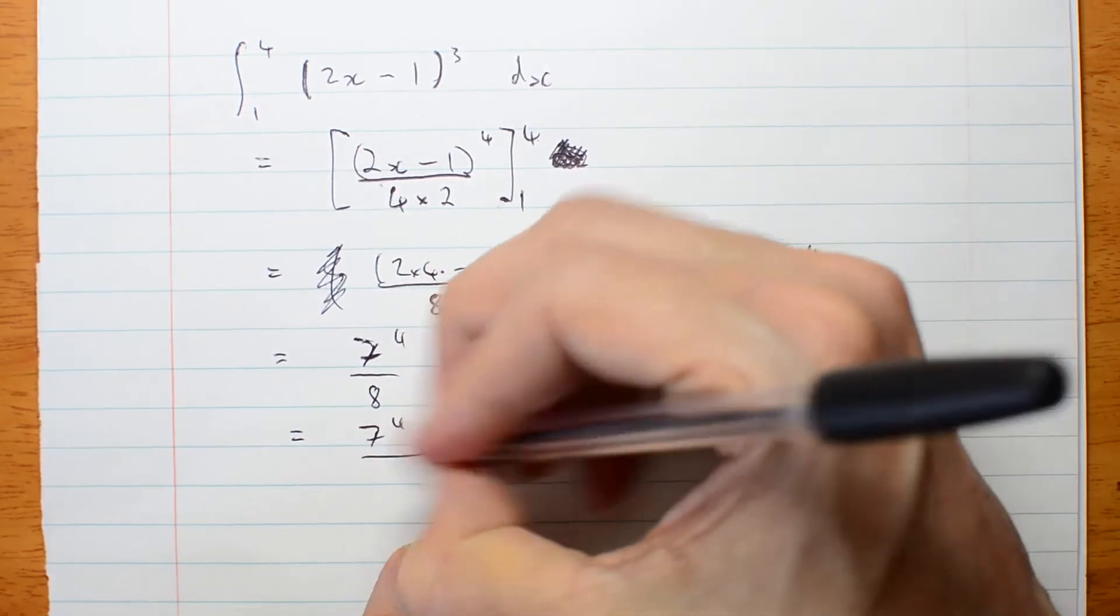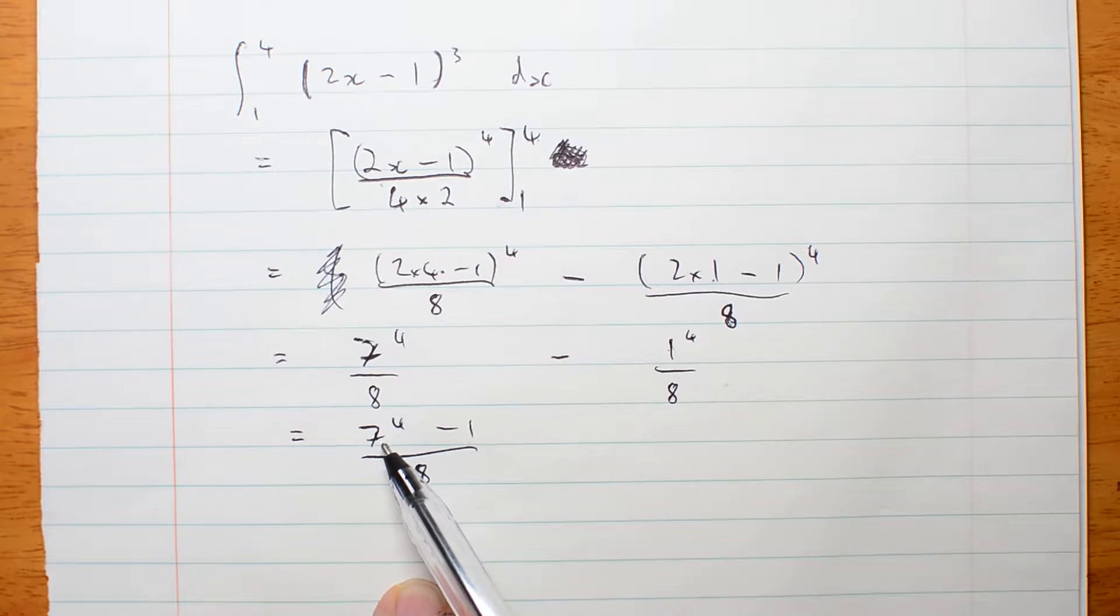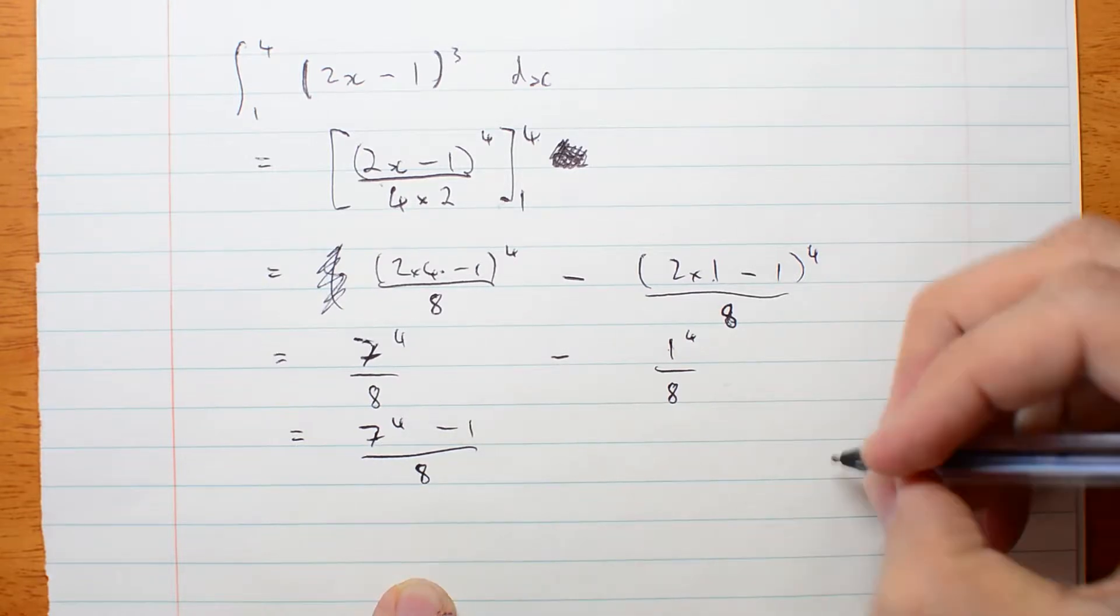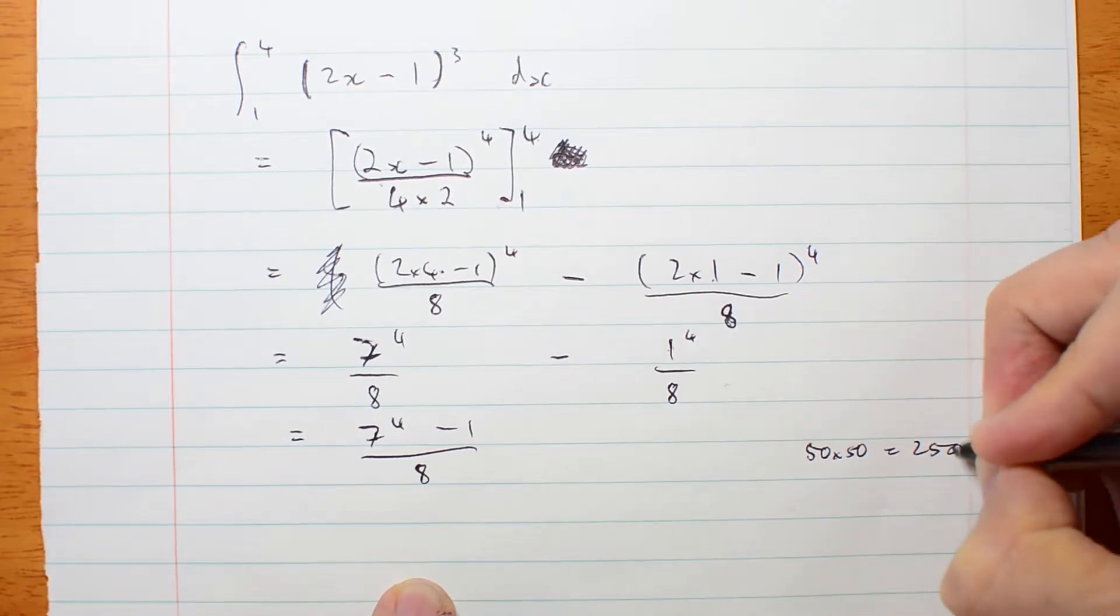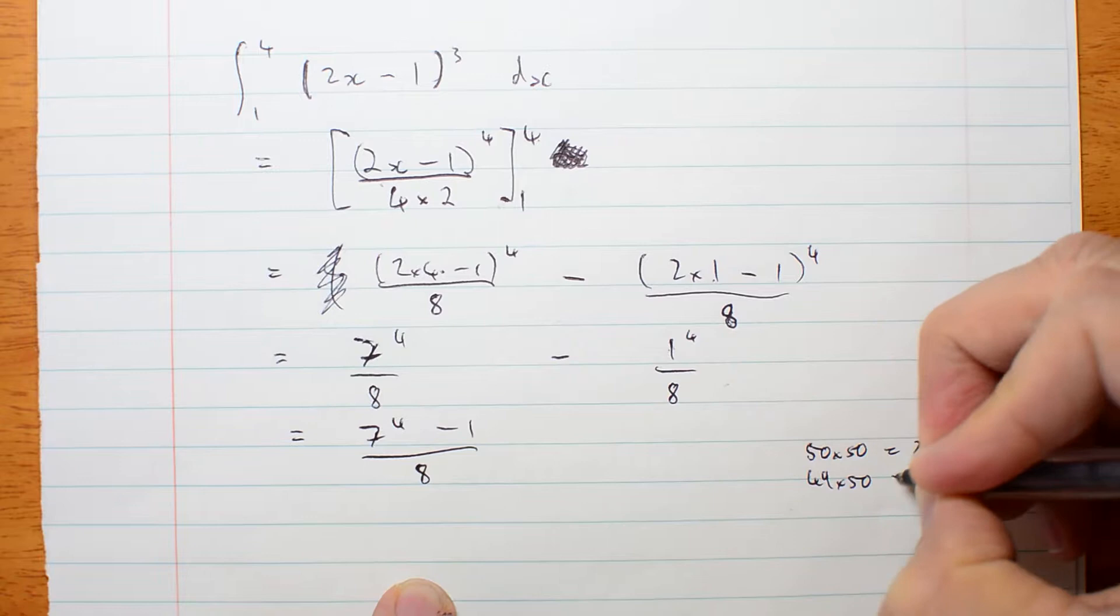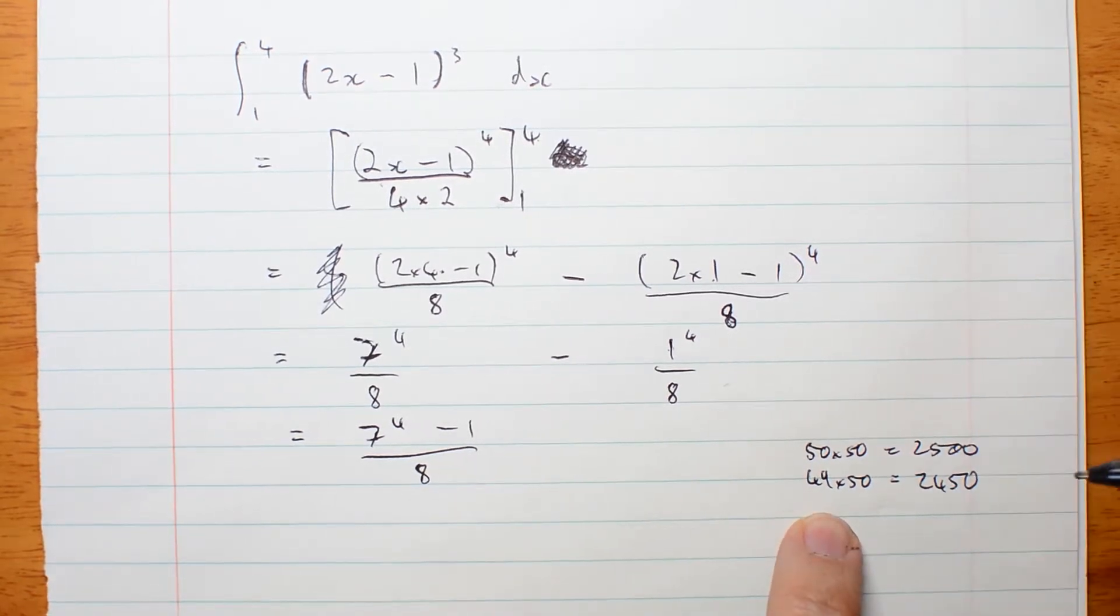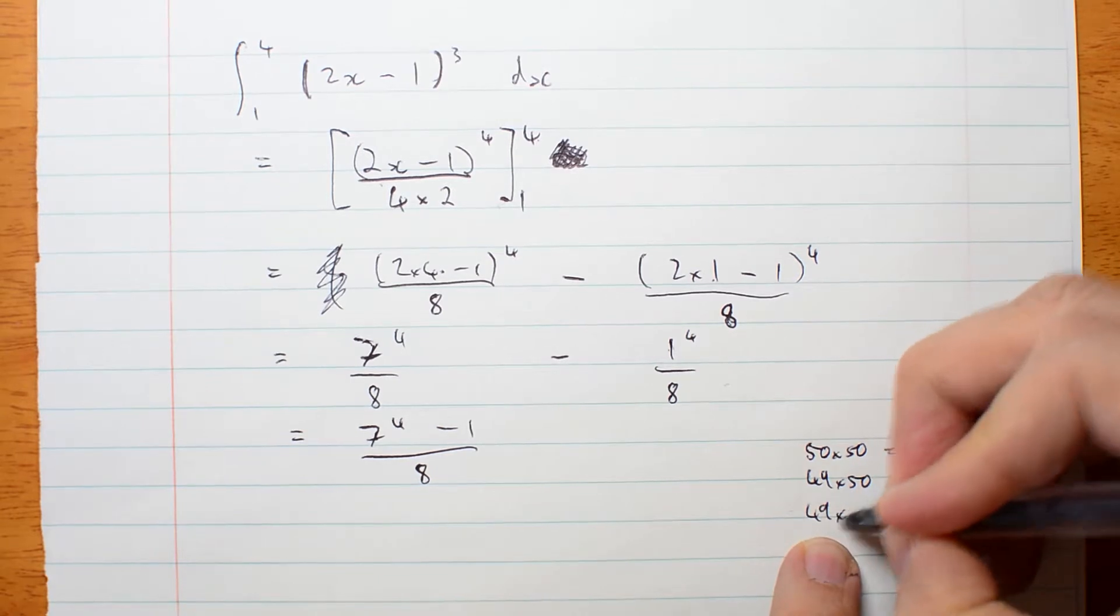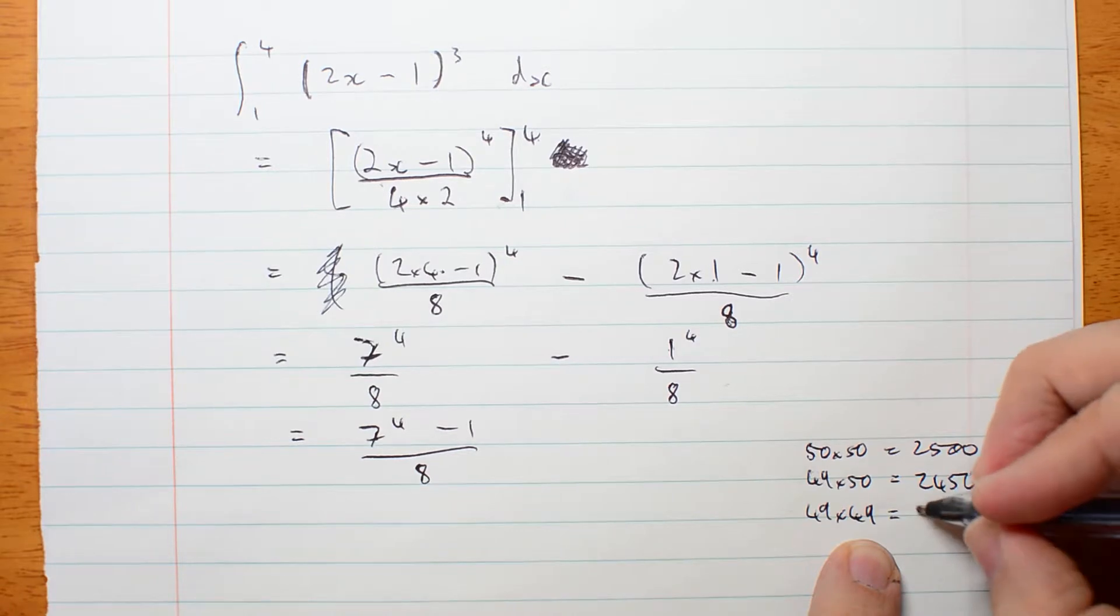That's 7 to the 4 minus 1 over 8. I want 49 squared. Well, 50 times 50 is 2,500. Let me do that, right? 50 times 50 is 2,500. So 49 times 50 is 1 less 50, 2,450. So 49 times 49 is 1 less 49 than this, which is therefore 2,401.